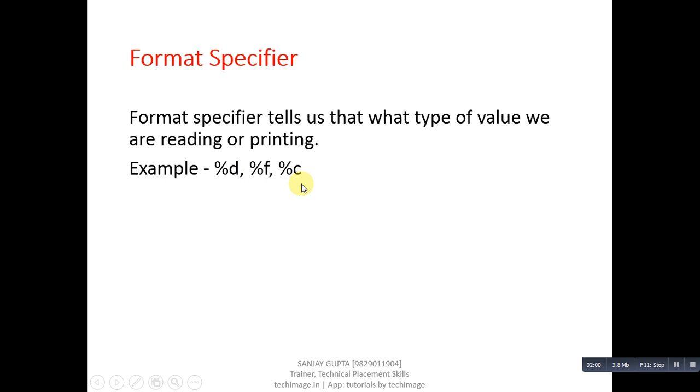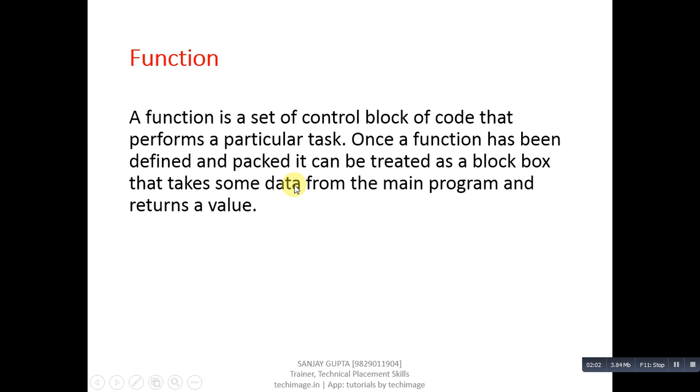Function: a function is a set of control block of code that performs a particular task. Once a function has been defined and packed, it can be treated as a block box that takes some data from the main program and returns a value. There are two types of functions: first is predefined and second one is user defined.